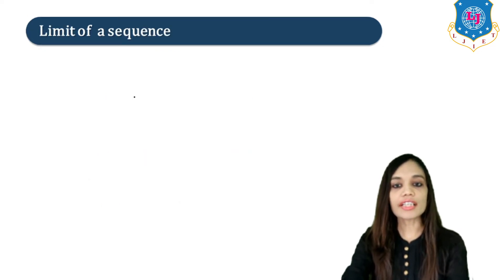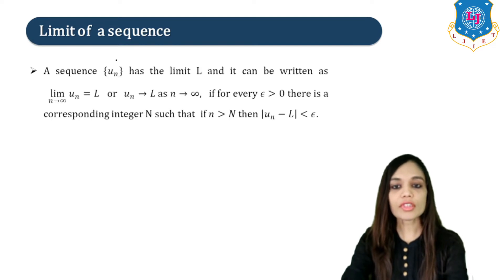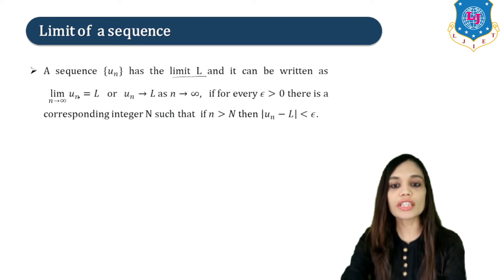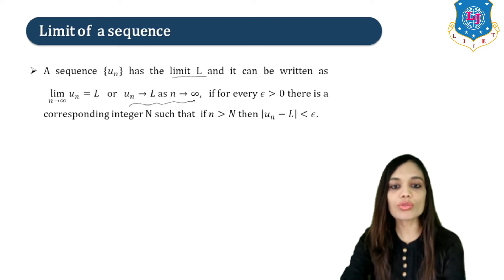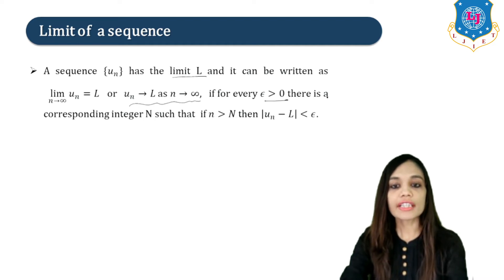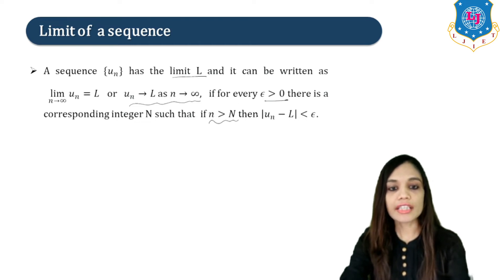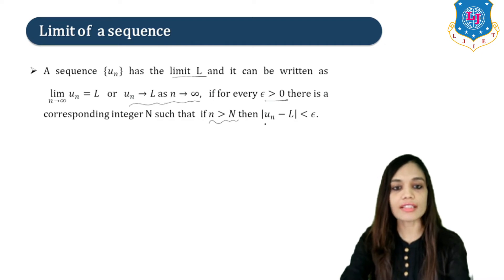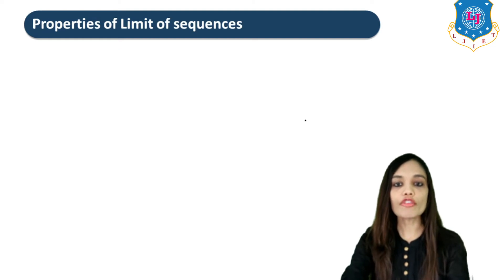Now let us study the limit of a sequence. A sequence {UN} has limit L, written as lim(N→∞) UN = L, or UN → L as N → ∞, if for every ε > 0 there is a corresponding integer N such that if n > N, then |UN − L| < ε.